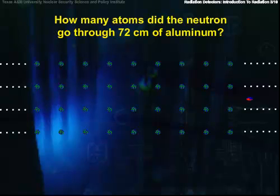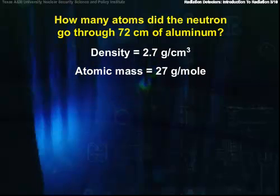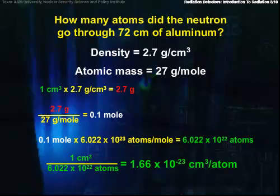How many atoms did the neutron go through? Let's use aluminum because its atomic mass is 27 and its density is 2.7 grams per cubic centimeter, making the math easy. One cubic centimeter weighs 2.7 grams, therefore it contains a tenth of a mole. This cubic centimeter contains 6.022 times 10 to the 22nd aluminum atoms. Each aluminum atom occupies 1.66 times 10 to the minus 23rd cubic centimeters.